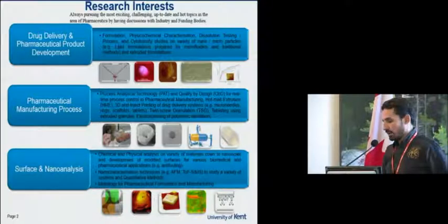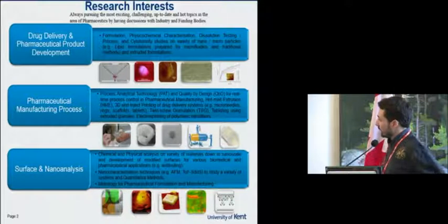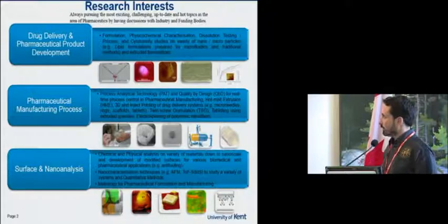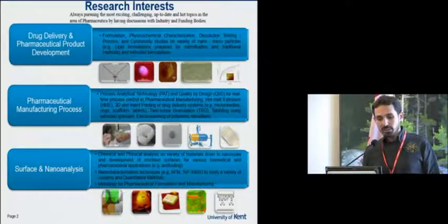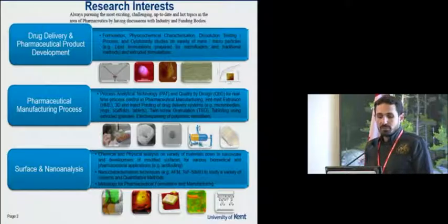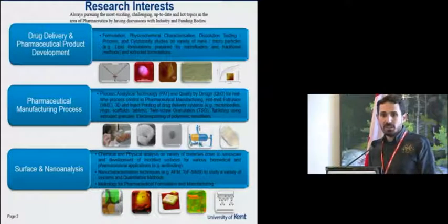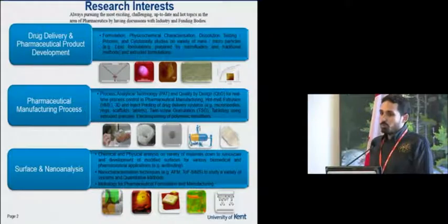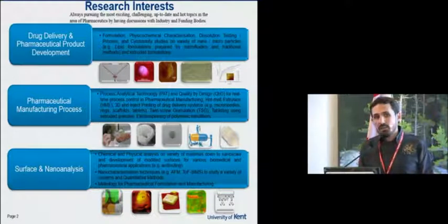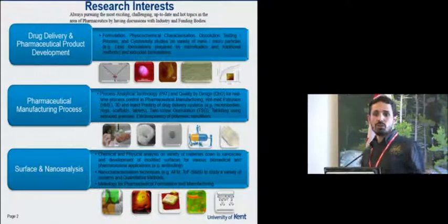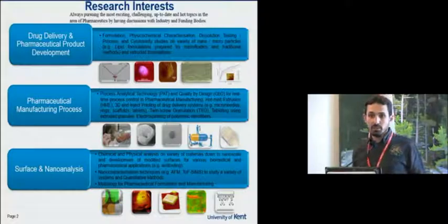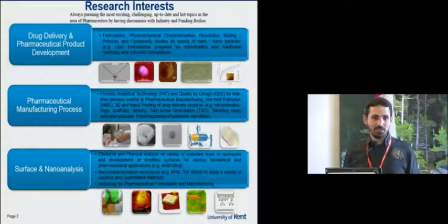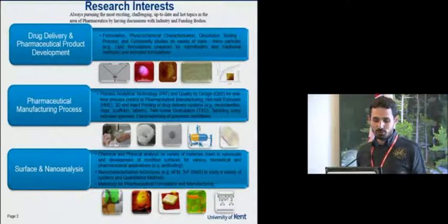In our group, we divide into three different areas. We have drug delivery and pharmaceutical product development, which involves formulations — like lipid formulations mostly — using traditional methods but also microfluidics. We also have pharmaceutical manufacturing processes like 3D printing and electrospinning, scaffolds, and the interaction of lipids with scaffolds. But most importantly, you need advanced characterization techniques to understand the system — and we do that using AFM, Cryo-TEM, TOF-SIMS analysis, and many other techniques. I'm not going to cover all of this in 15 minutes, just a few things to show you what we do.